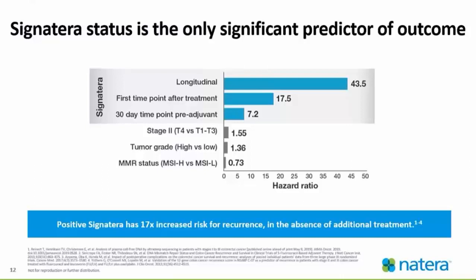Signatera status is the only significant predictor of outcome. If a patient has a positive Signatera result, it indicates a 17% increased risk for recurrence in the absence of additional treatment. This diagram shows the accuracy is very predictive. The hazard ratio shows how many times more likely a patient will recur if the result is positive. The longitudinal bar graph shows that if a patient was not treated, they will recur — studied over three years' worth of data.